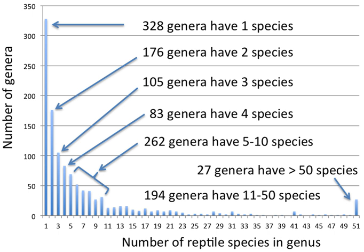In binomial nomenclature, the genus name forms the first part of the binomial species name for each species within the genus. For example, Panthera leo and Panthera onca are two species within the genus Panthera. Panthera is a genus within the family Felidae.